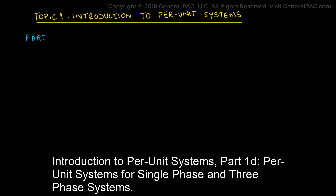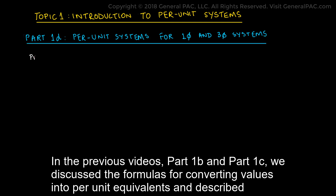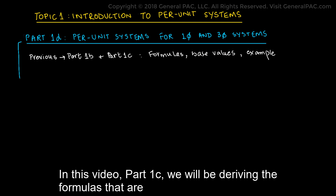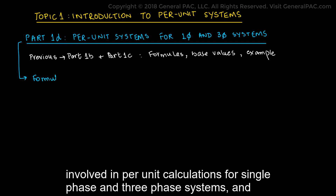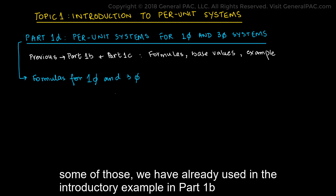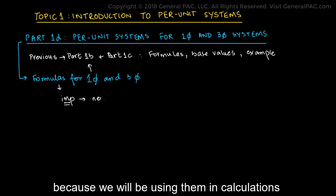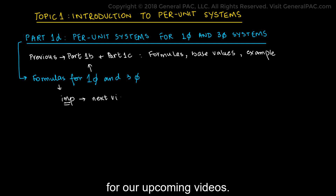Introduction to Per Unit Systems Part 1d: Per Unit Systems for Single-Phase and Three-Phase Systems. In the previous videos Part 1b and Part 1c, we discussed the formulas for converting values into per unit equivalents, described base values, and then moved forward by solving a simple example. In this video, we will be deriving the formulas involved in per unit calculations for single-phase and three-phase systems. Some of those we have already used in our introductory example in Part 1b, and it is essential to have a really good understanding of these formulas because we will be using them in calculations for our upcoming videos.